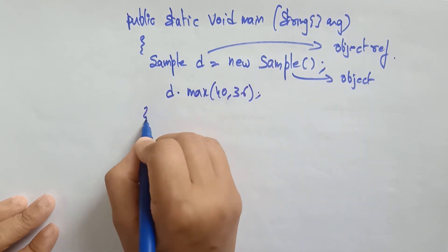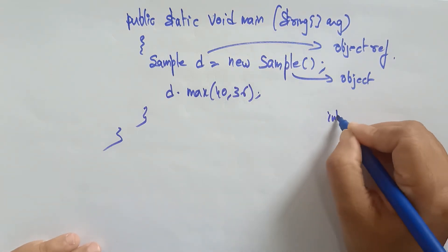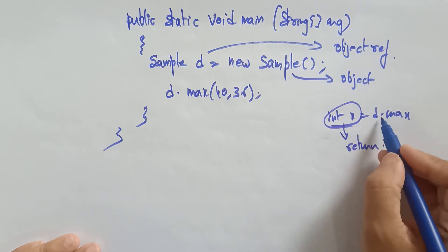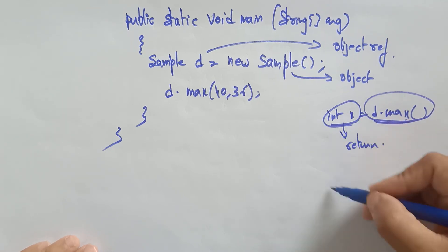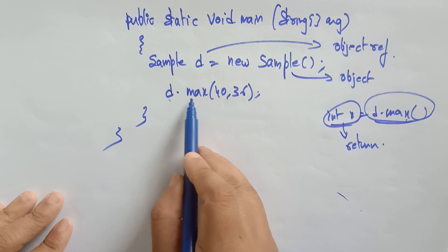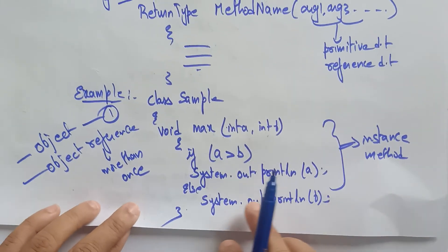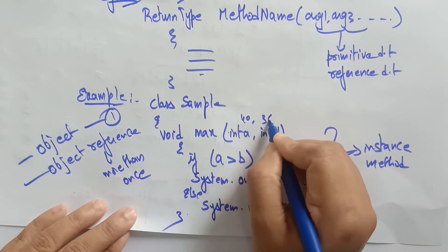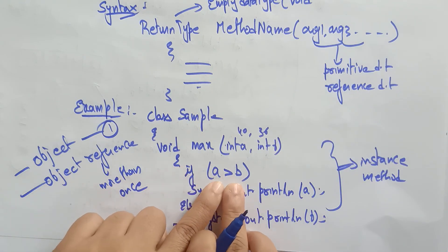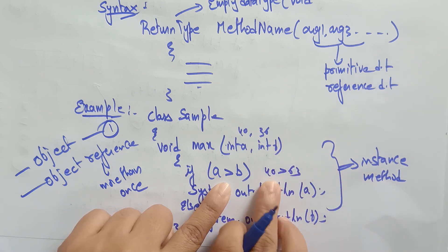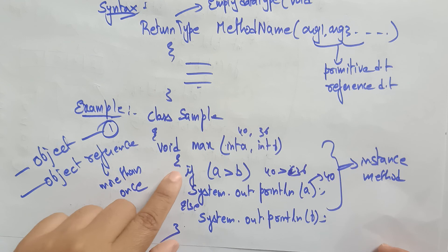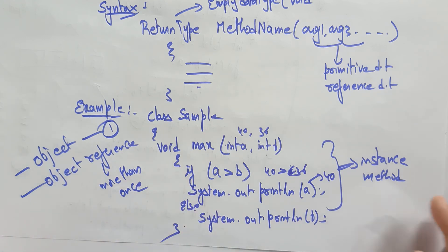In the previous video I wrote int x = d.max — because the return type was there, I had to copy the returned value into a variable and print it. But here there is no return type, so simply write d.maximum(40, 36). The controller comes to this instance method, checks: 40 is greater than 36 — yes — so it directly prints 40.